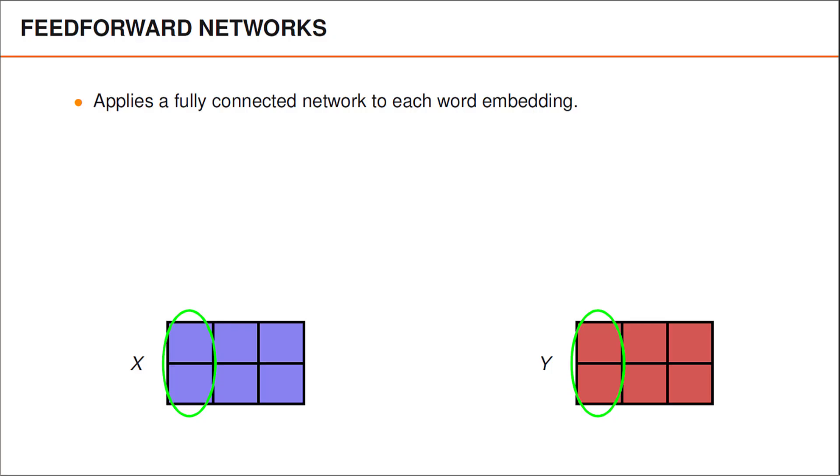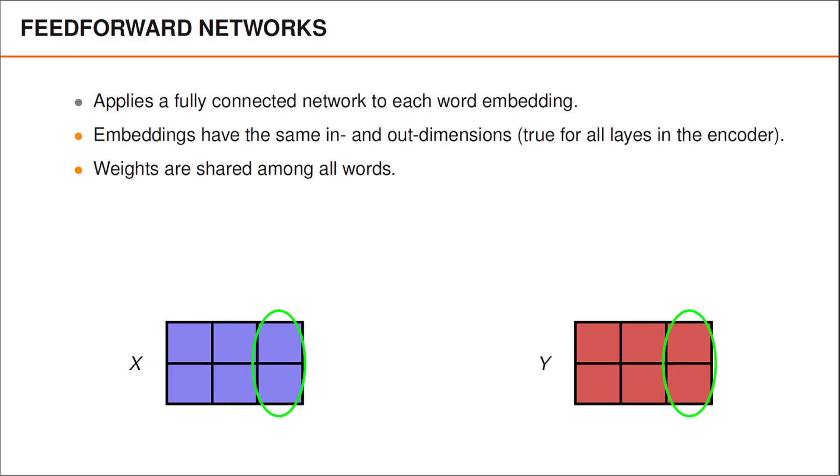To compute the first output vector in y, we apply the feedforward network to the first word embedding. Similarly, to compute the second output vector, we apply the network to the second input vector, and so on. Like all the other layers in the encoder, the input and output matrices have the same dimensions, and the weights are shared among all words. Weight sharing is important, since it limits the number of parameters and helps the network generalize better to sequences of varying length.